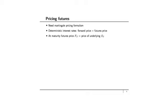What about pricing futures? In order to price futures, we need something called the martingale pricing formalism. This is because in its full generality, interest rates are random or stochastic. When you have stochastic interest rates, we cannot use the simple arbitrage arguments constructed so far to price a futures contract. If, on the other hand, interest rates are deterministic, then the forward price equals the futures price, and we can use our arbitrage arguments to derive it. One thing we do know is that at maturity, the futures price F(T) equals the price of the underlying S(T), and this is what we will use in the next few slides to make hedging arguments.